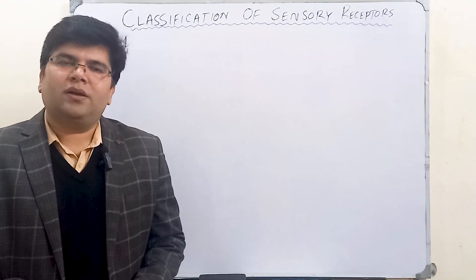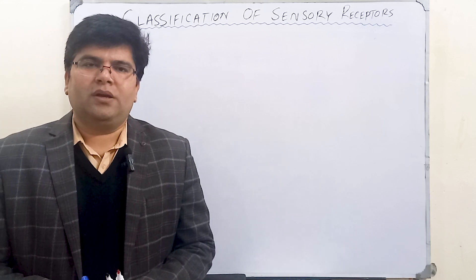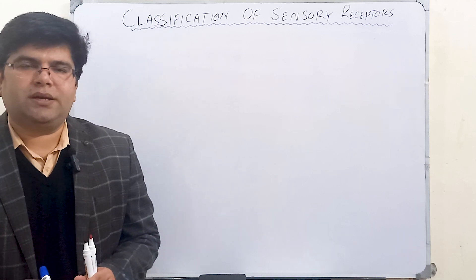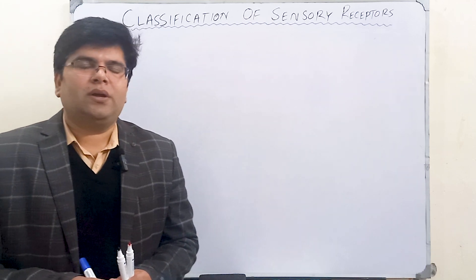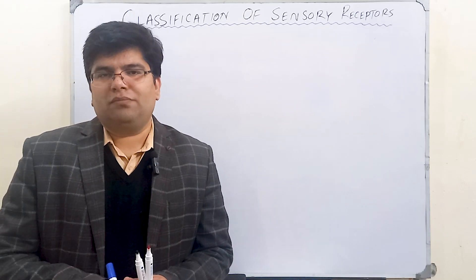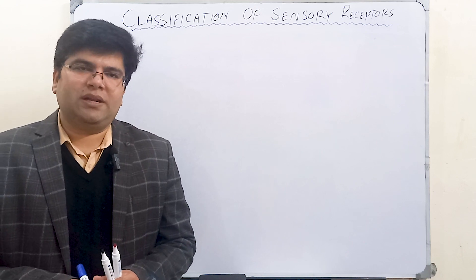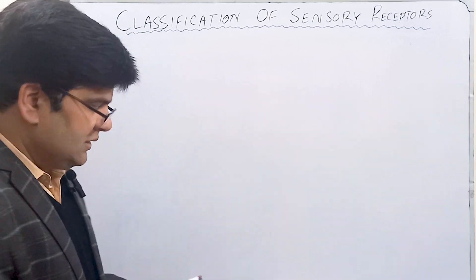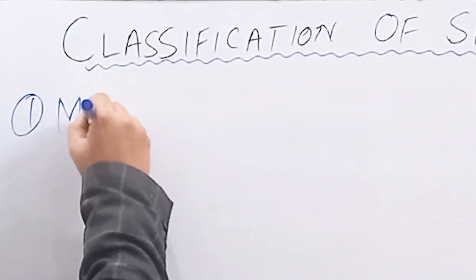Assalamu alaikum dear students, we are going to study a classification of receptors. The most important criteria used to classify sensory receptors is on the basis of nature of sensory stimulus, or the modality of sensation. On this basis, receptors can be classified into five categories.